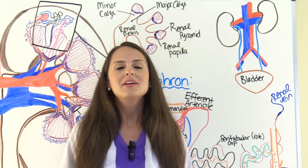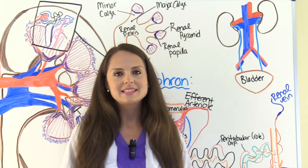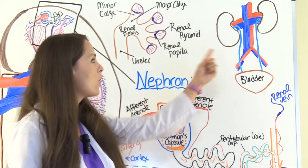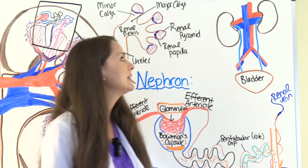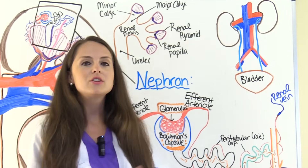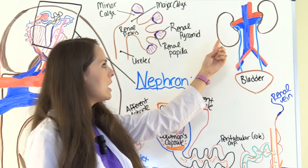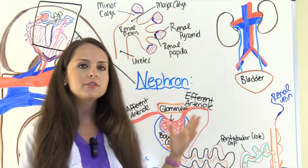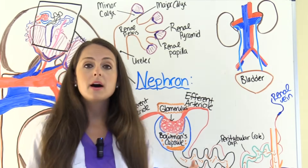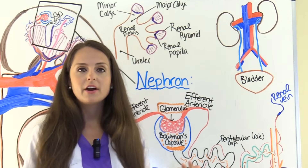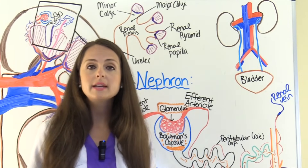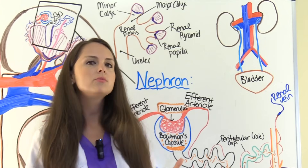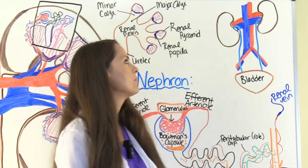First, let's start out talking about the kidneys. You have two kidneys — a right kidney and a left kidney. Your right kidney sits a little bit lower than the left kidney, and the reason for this is because above the right kidney is the liver. To help accommodate the size of the liver, that kidney has to be just a little bit lower when you compare it to the left one.